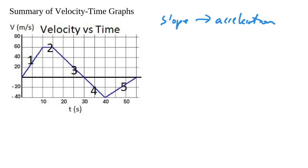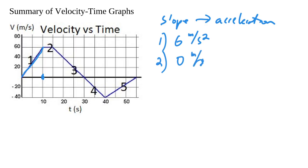We're going to find the acceleration for each of these five segments by finding the slope. For the first one, we're going 60 meters per second in 10 seconds, so that's a slope of 6 meters per second squared — we're speeding up, getting faster. In segment two, you can see that's a zero slope; we're moving at constant velocity.